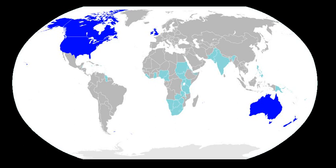English was adopted in North America, India, parts of Africa, Australasia, and many other regions. In the post-colonial period, some of the newly created nations that had multiple indigenous languages opted to continue using English as the official language to avoid the political difficulties inherent in promoting any one indigenous language above the others. In the 20th century, the growing economic and cultural influence of the United States, along with worldwide broadcasting in English by the BBC and other broadcasters, significantly accelerated the spread of the language across the planet. By the 21st century, English was more widely spoken and written than any language has ever been.